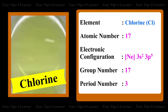For the element Chlorine, the atomic number is 17. The electronic configuration is [Ne] 3S2, 3P5. The group number is 17 and the period number is 3.